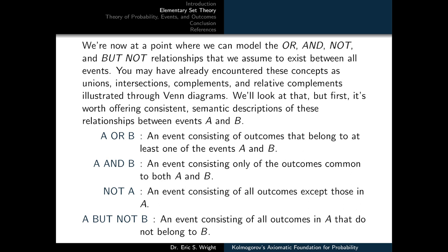It's worth offering consistent semantic descriptions of these relationships between two events A and B. A or B is defined to be an event consisting of outcomes that belong to at least one of A and B. A and B is an event consisting only of outcomes common to both A and B. Not A is an event consisting of all outcomes except those in A. And A but not B is an event consisting of all outcomes in A that do not belong to B.